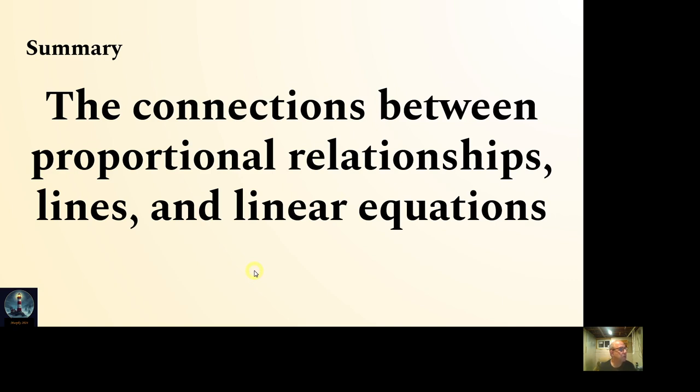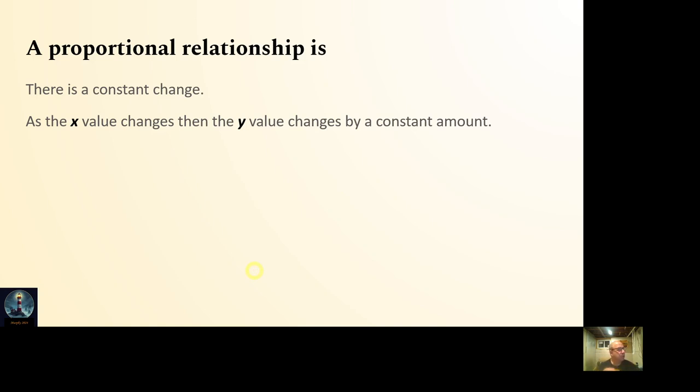And so, in summary, the connections between proportional relationships, lines, and linear equations, first of all, it's a proportional relationship, so there's a constant change. As the x value changes, then the y value changes by a constant amount. So every time you change the x by a certain amount, the y will change by a certain amount, and it'll always be constant like that.